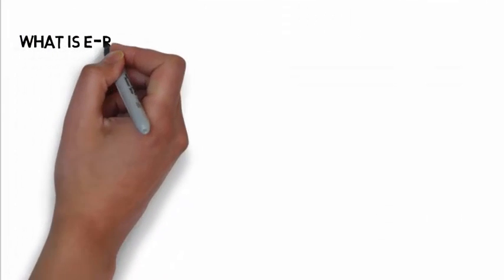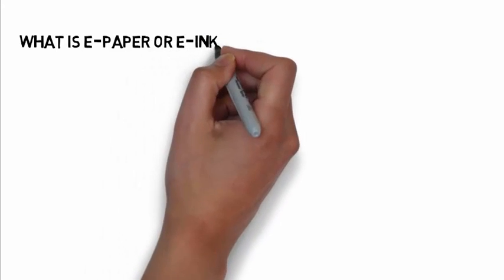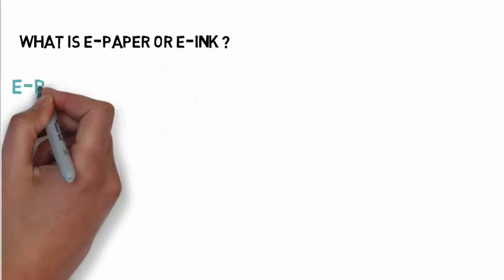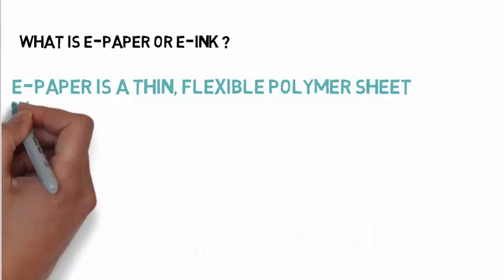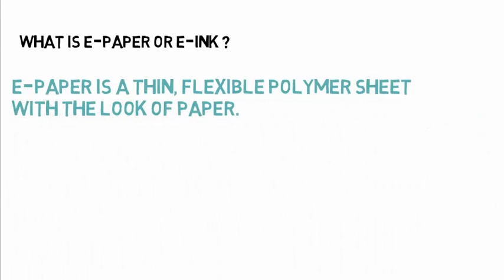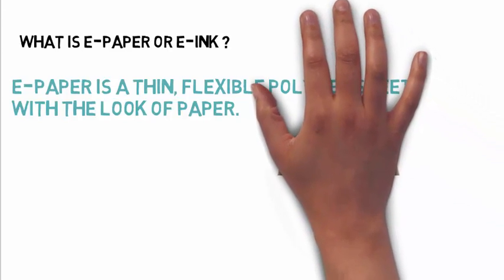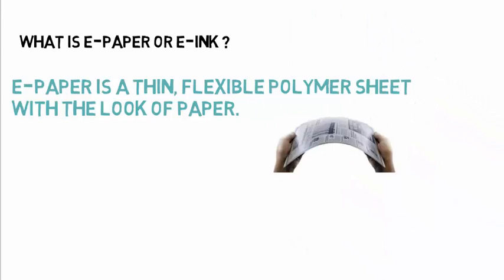If somebody asked me in a single line what is e-paper, my answer would be e-paper is a thin flexible polymer sheet with the look of paper. But the thing is e-paper is a bit thicker than regular paper and weighs more because it contains microscopic electronic ink particles.